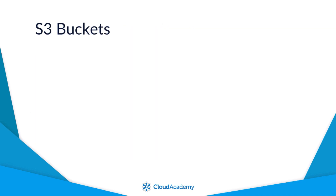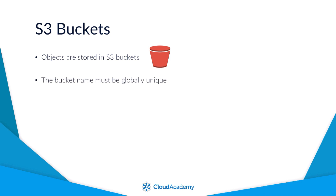When uploading objects to S3, specific containers are used to manage your data. To store objects in S3, you first need to define and create a bucket — you can think of a bucket as a parent folder for your data. This bucket name must be completely unique, not just within the region you specify, but globally across all other S3 buckets that exist, of which there are many millions.